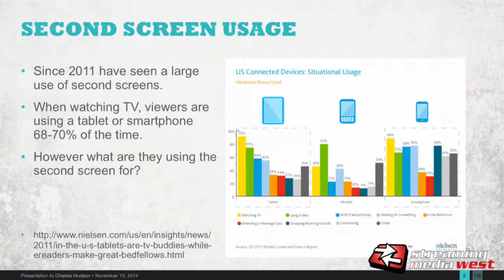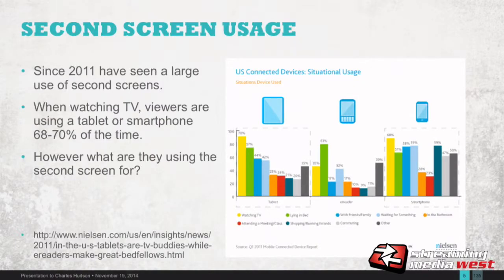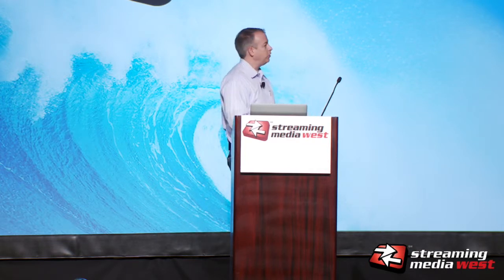Some usage statistics: since 2011, we've seen a really large change in this space. The yellow bars are where people are using devices when they're watching TV — those are the tallest bars, showing where people are most likely to use their secondary screens, their tablets, and smartphones. The stats are 68 to 70% of the time while they're watching TV, they're using a tablet or smartphone. However, we need to drill down further to understand what they're really using those devices for, because it could just be web browsing, checking the weather, sending emails — we want to see what the important actions are in that demographic.